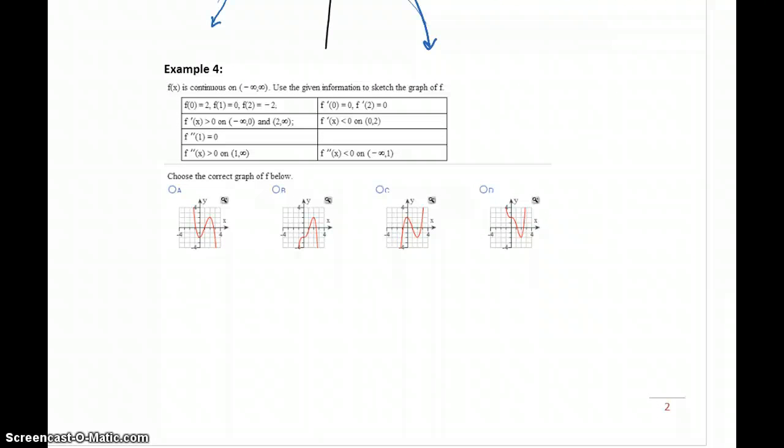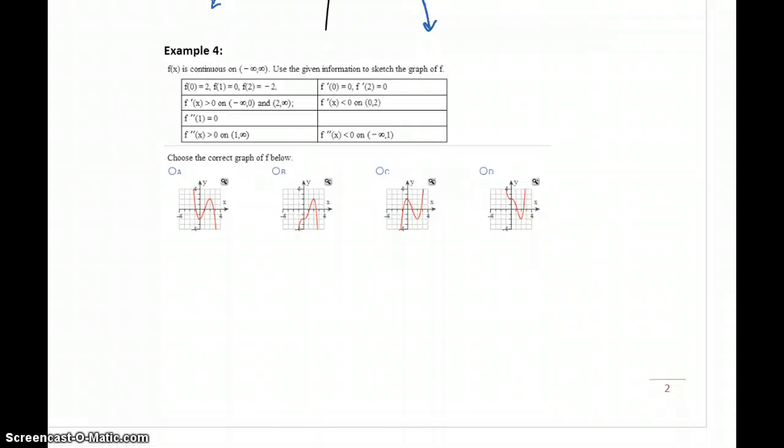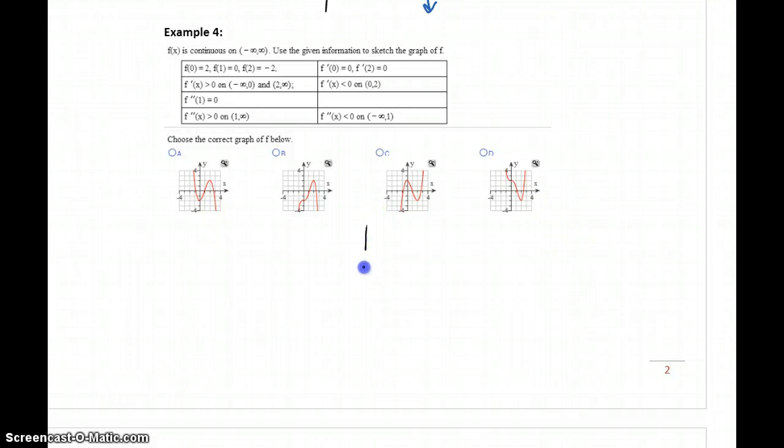So we have a similar function to graph in example 4, similar information, but again, provided in a different format. Instead of sign charts, we're just given a table with the different information to consider. So we have our function values. At 0, our function value is 2. At x equals 1, our function value is 0. And at 2, our function value is negative 2. So we have three points to consider.